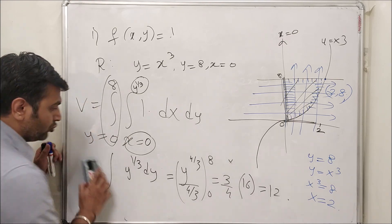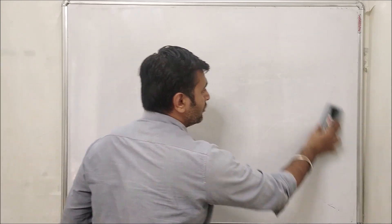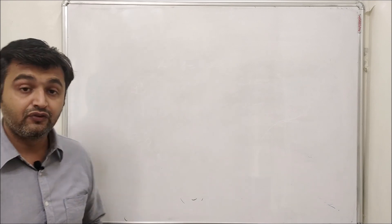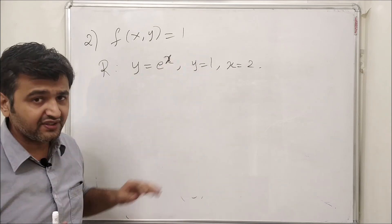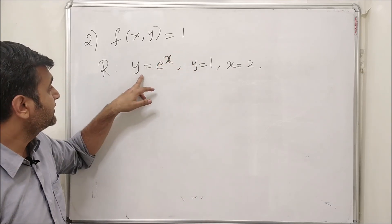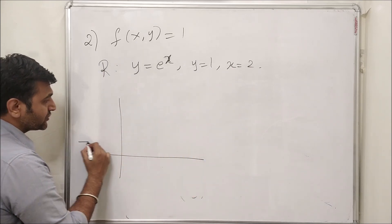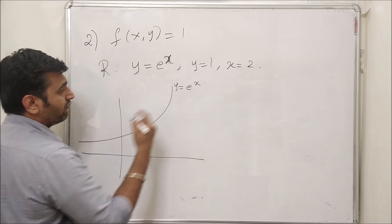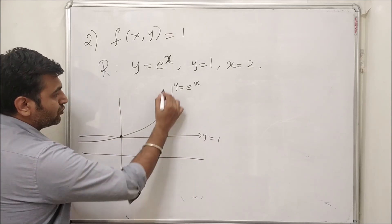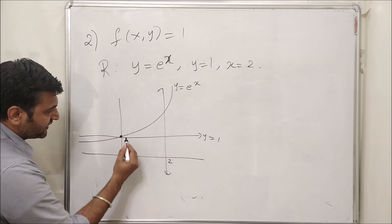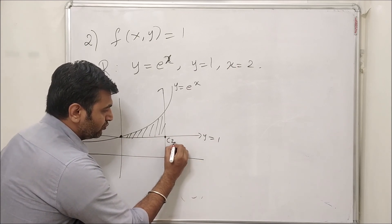Let's take one more example so the idea becomes clearer. Always sketch the region first. For the second example, the function is again 1 for simpler calculation, and the region is bounded by three curves: y = eˣ, y = 1, and x = 2. The curve y = eˣ is the standard exponential. The line y = 1 is horizontal, and x = 2 is a vertical line.